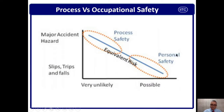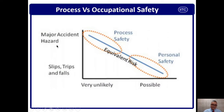The graph shows that personal or occupational safety has high probability but low severity — corresponding to slip, trip, and fall type injuries. For process safety, the likelihood is very unlikely in terms of frequency, but the severity is at the major accident hazard level. This means the event can kill many people at one time and has a huge impact on production loss and financial loss.